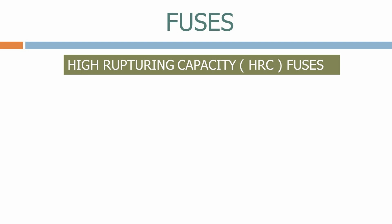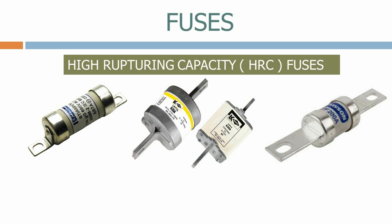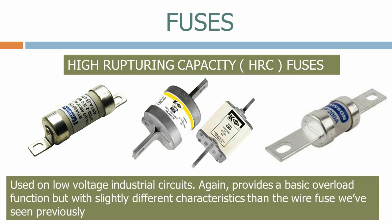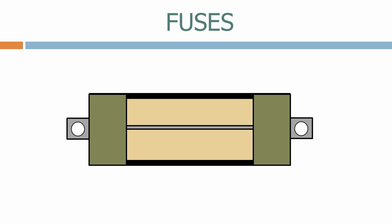The next type of device that we normally see is the high rupturing or HRC fuse. These are used on low voltage industrial circuits. Again, they provide a basic overload function but with slightly different characteristics than the wire fuse we've seen previously. If you look inside the fuse instead of a single wire you will see a compound that will ignite once the current reaches a certain magnitude, hence the name high rupturing capacity.